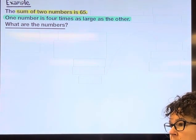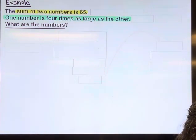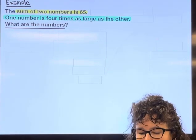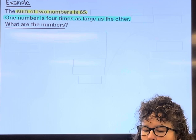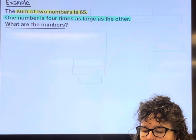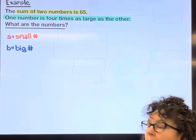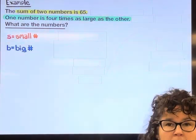So we're being asked for two numbers, and so those two numbers are going to be our variables. One of them is smaller than the other one, so I'm just going to call one of them s for the small number and the other one b for the big number. If there are two things you don't know, then you need to write two equations.